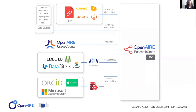Our position in the OpenAIRE ecosystem: we are a service on top of the OpenAIRE Research Graph. Apart from only displaying its contents, we also have functionalities to enhance them. In many cases, we are the place where not only the research graph but other OpenAIRE services can show their results — for example, displaying resource statistics or usage metrics for the records we display.